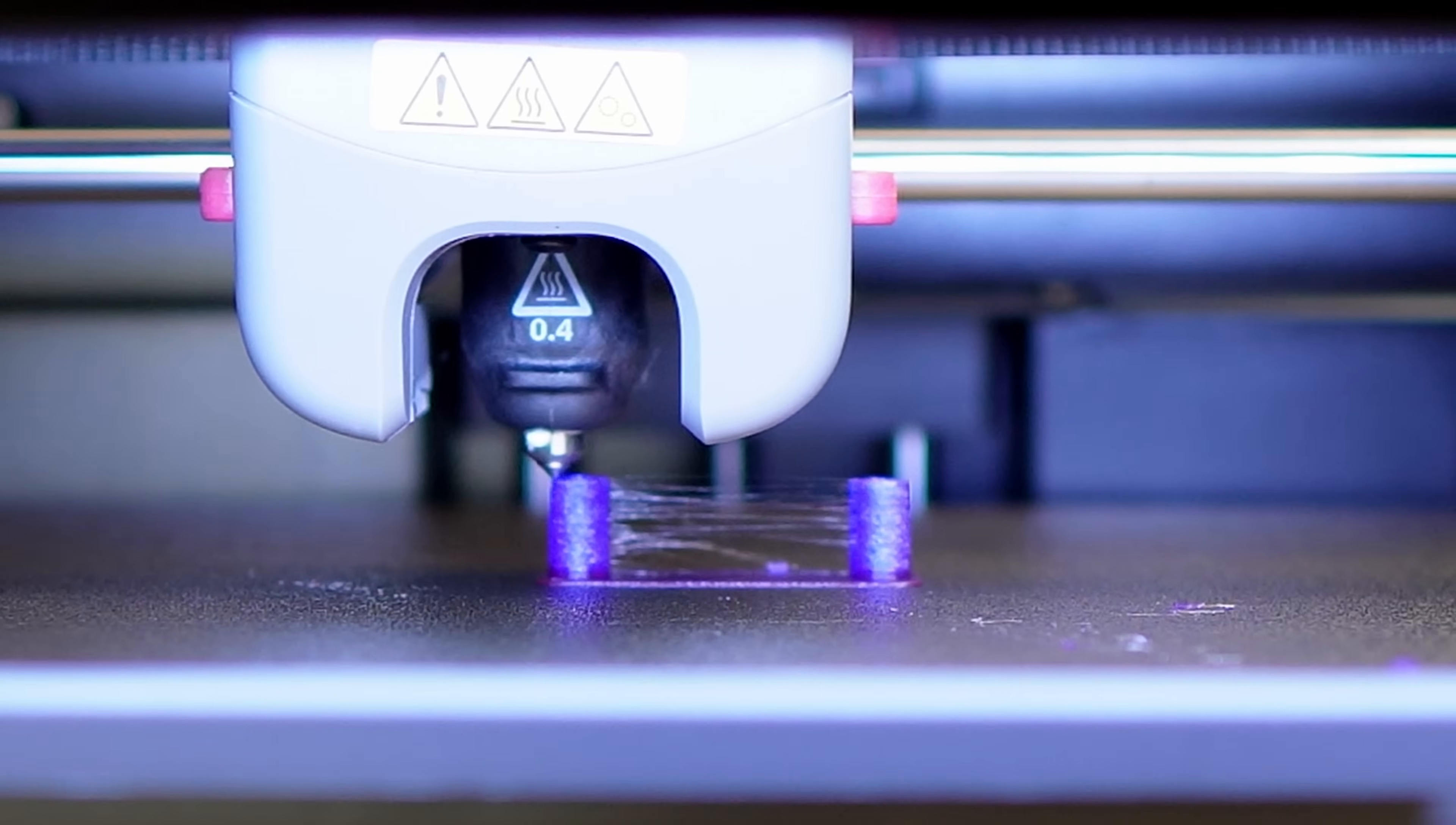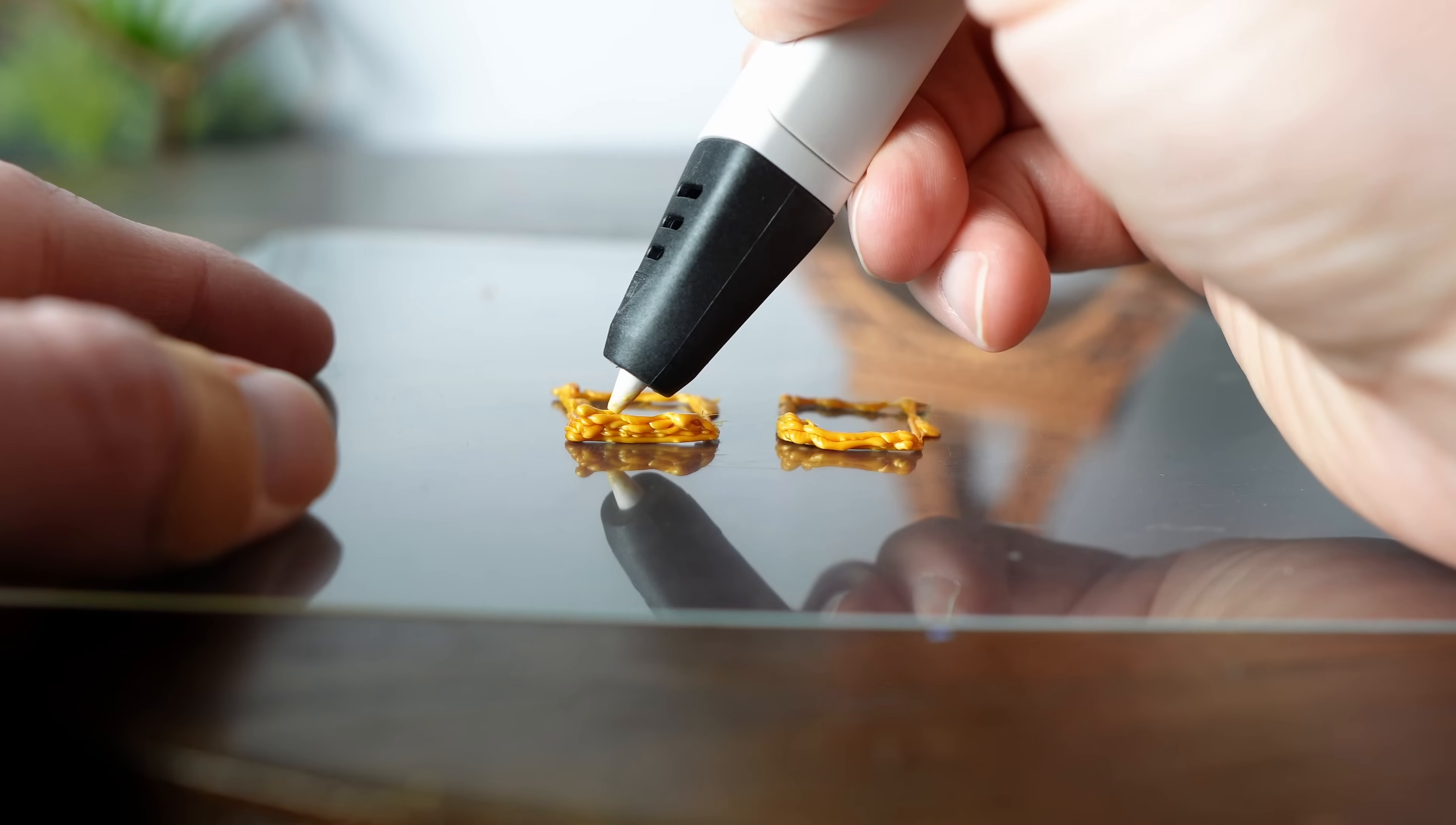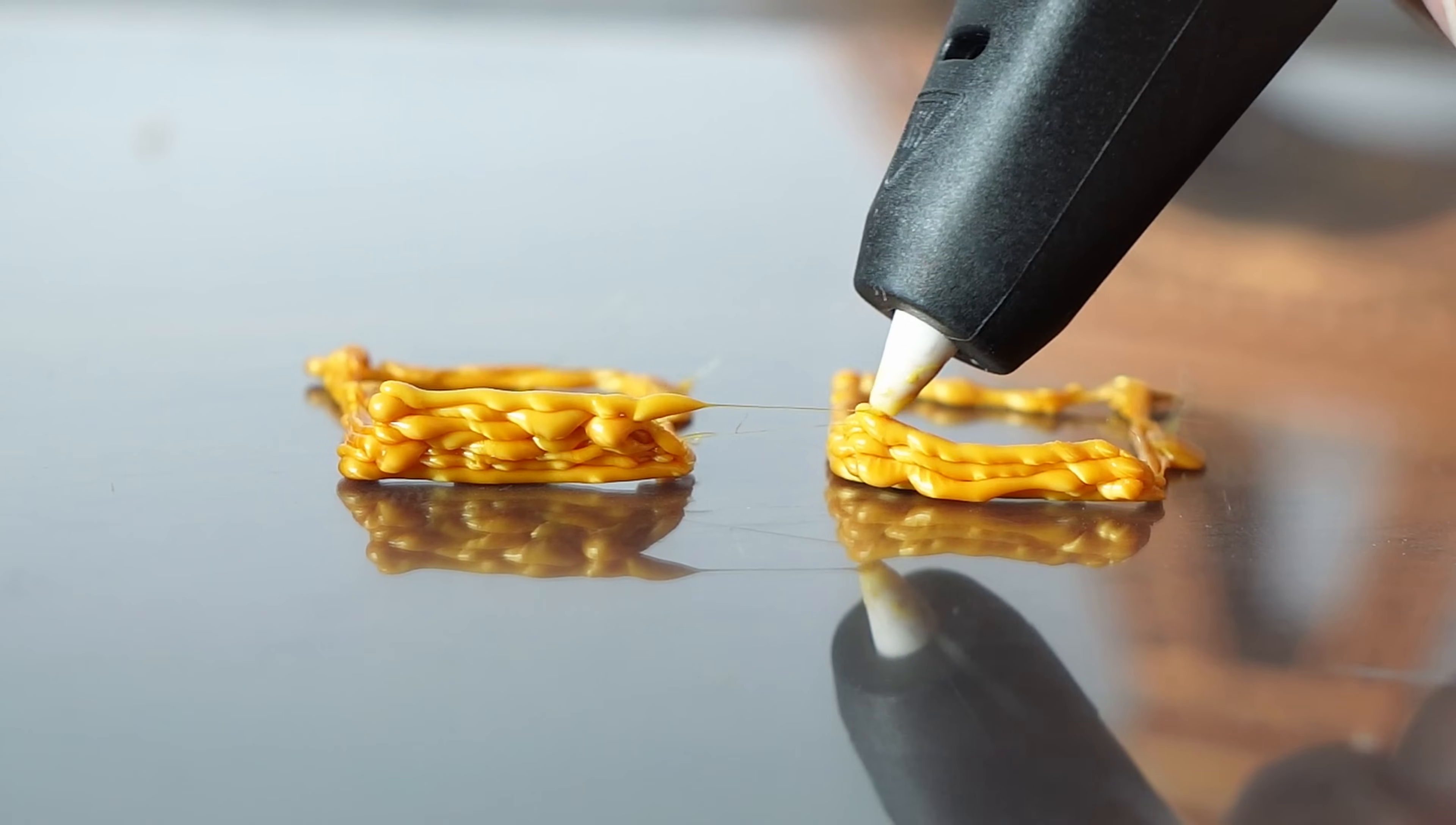When a printer prepares to travel, it'll usually coast and wipe the printhead before moving to another part. This happens really fast and is hard to catch on a camera so here's an example with a 3D pen. Before traveling to the next print, I'll move the nozzle a little more and wipe it to help prevent stringing. Let's see that again.